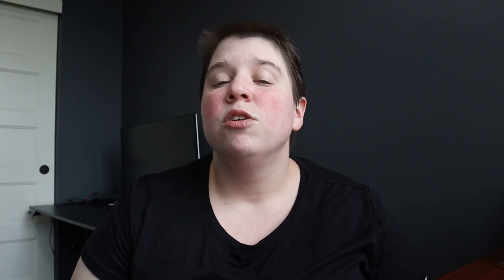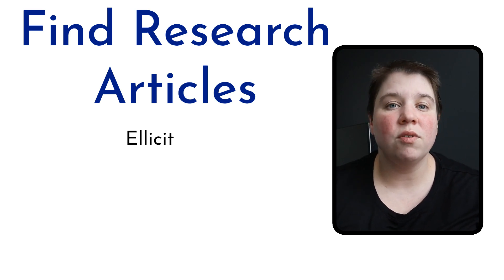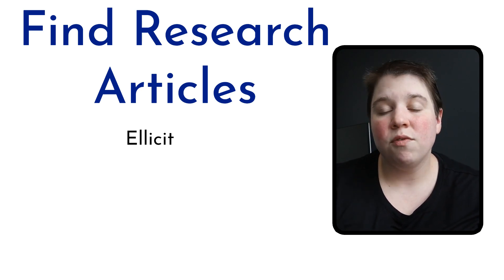The first task that I recommend outsourcing to AI is finding research articles. There are now so many different tools, free and paid, that you can use to actually find your research articles, and honestly they are a lot faster than using something like Google Scholar. Even though learning the basics of Google Scholar can be really helpful, something like Elicit can really quickly find research articles and analyze them for you.